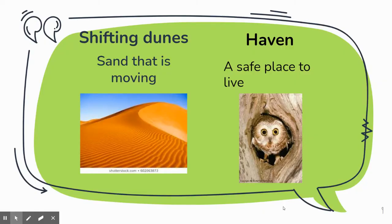Shifting dunes means sand that is moving. In this picture, you can see the little wavy lines that look like waves in the ocean. But that's the sand that moves from the wind.